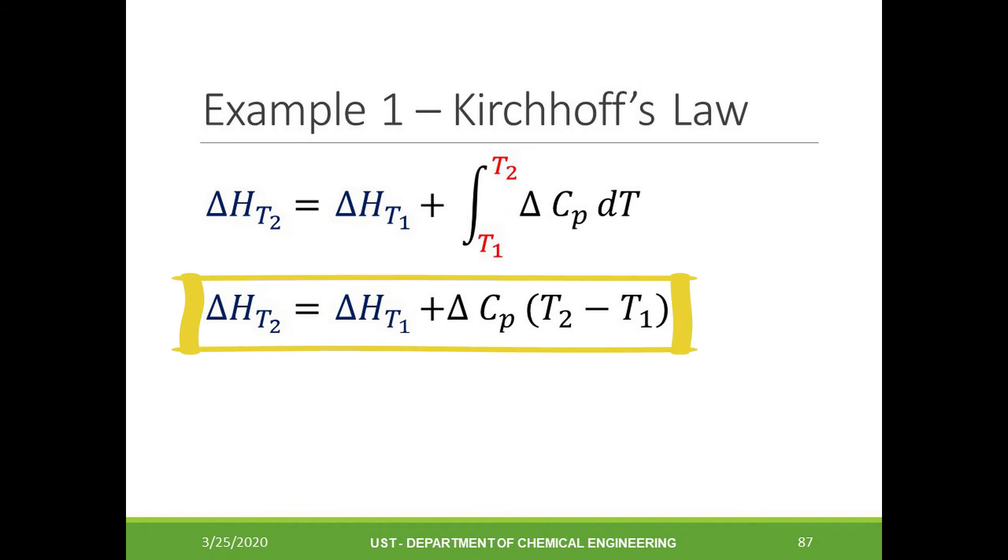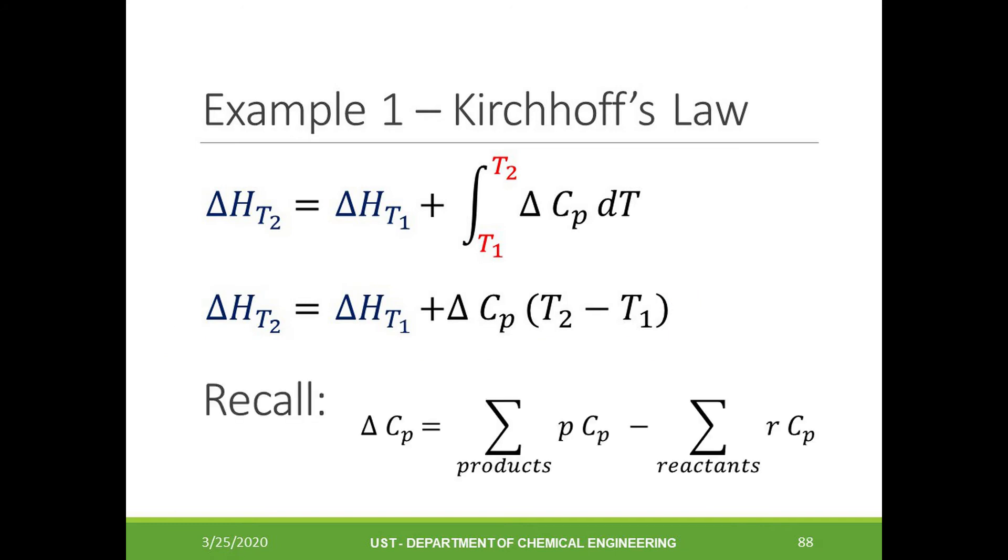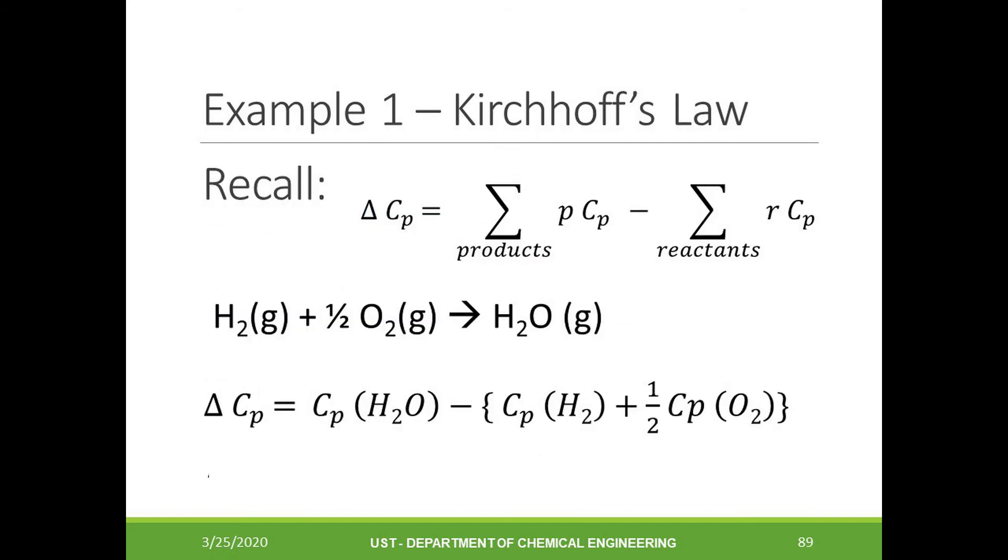Recall that delta Cp is equal to the summation of the heat capacities of the products minus the heat capacities of the reactants. Continuing on with our calculations, we write the chemical equation, identify the stoichiometric coefficients, and calculate the change in the heat capacity. Substituting the values, this should give us a final answer of negative 9.92 joules per Kelvin per mole.